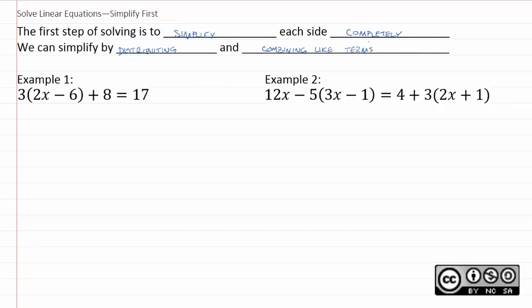Example 1 here has a parenthetical with a number in front, which suggests that we're going to begin with the distributive property. So I'll distribute that 3. Remember, 3 times 2x is 6x, 3 times negative 6 is negative 18, plus 8 equals 17.